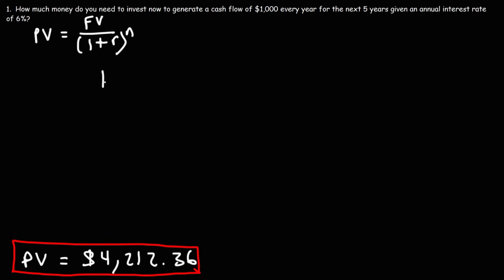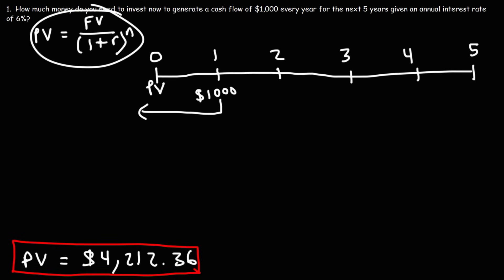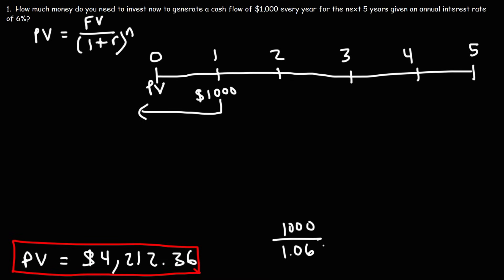So let's create a number line from 0 — which corresponds to the present — through 1, 2, 3, 4, 5. So $1,000 received one year from now is worth how much today? Using the formula, 1,000 is the future value. If you plug in 1,000 and divide by 1.06 raised to the first power, because we're finding the present value one year from now.